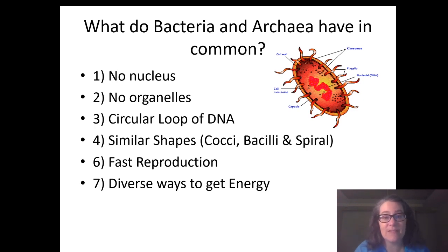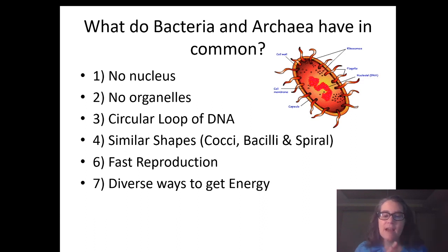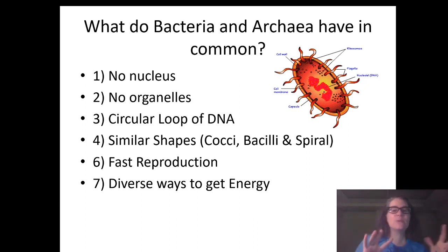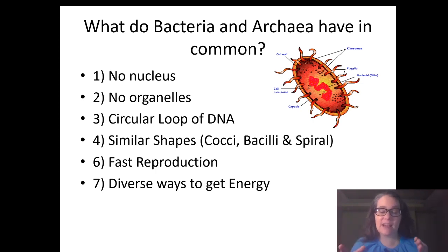There are some commonalities between bacteria and archaea. They both do not have true nuclei or membrane-bound organelles. They often have a circular loop of DNA rather than the linear links we see in eukaryotic cells. They have lots of shapes — round, boxy, or spiral. They have very fast reproduction, can reproduce in hours, and they have diverse ways to get energy.